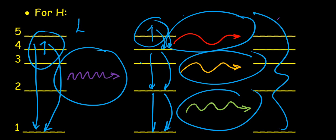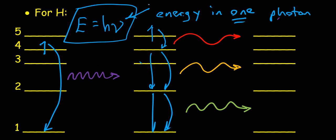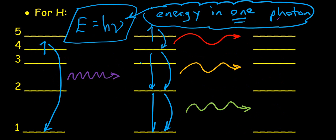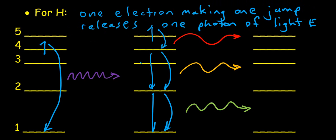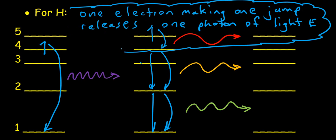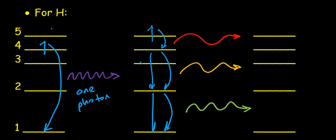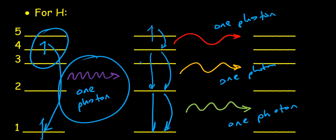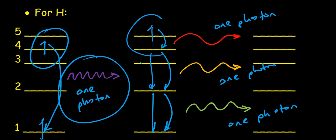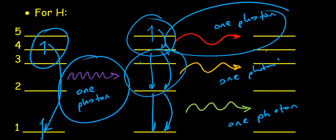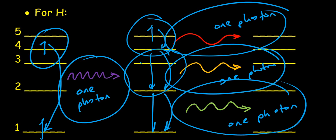The amount of light given off in any of these jumps is given by the equation E = hν. This equation gives us the energy in a single photon of light. When one electron makes one jump from a higher to lower energy state, it releases a single photon of light energy. In the first case, one electron making one jump back to the ground state releases a single photon of violet light. In the second scenario, the small first jump releases a single photon of red light, the next jump releases a single photon of orange light, and the last jump releases a single photon of green light.